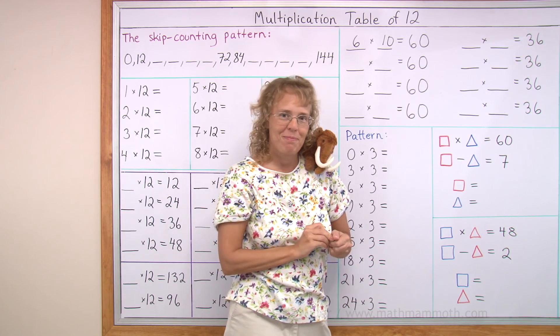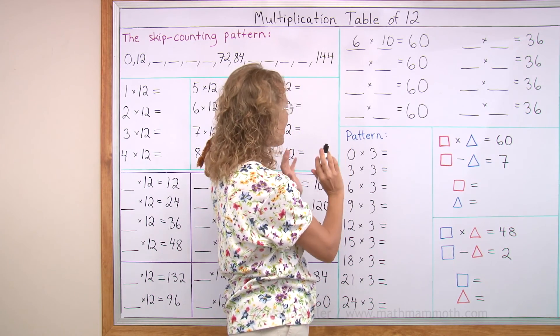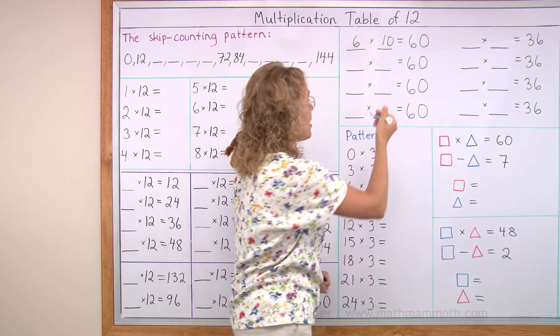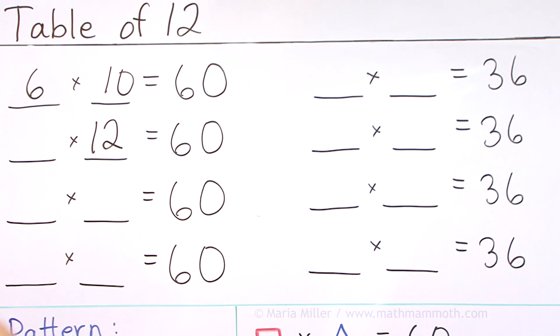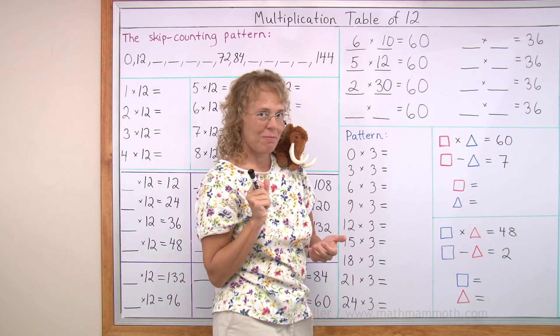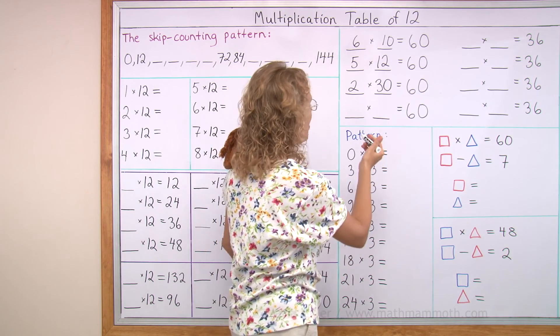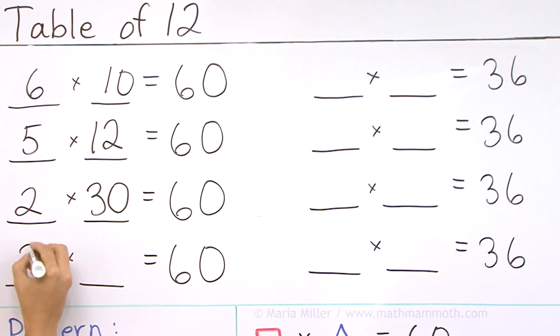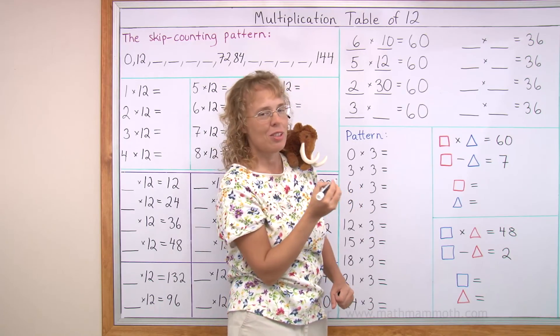What else? Well, we just studied the table 12. It's there too. How many times 12? Five times 12. What else? Notice it is an even number. You could write two times something, two times 30. Then we have one times 60, right? But here I want to write three times something. Can you tell me what?